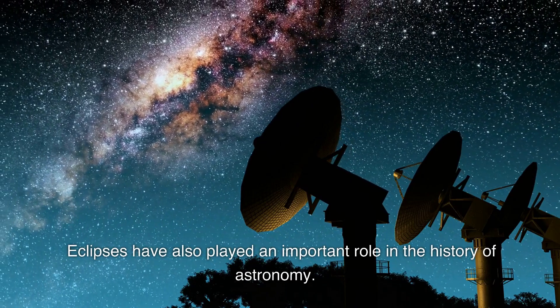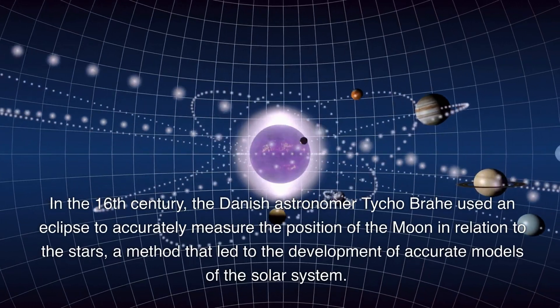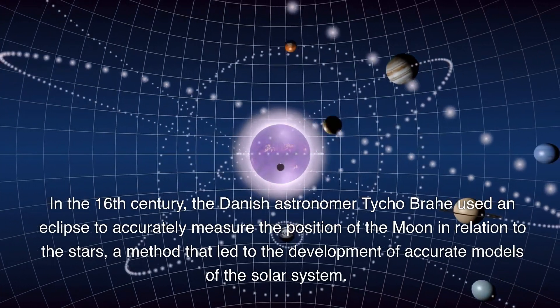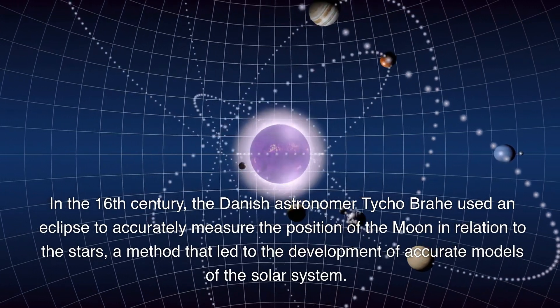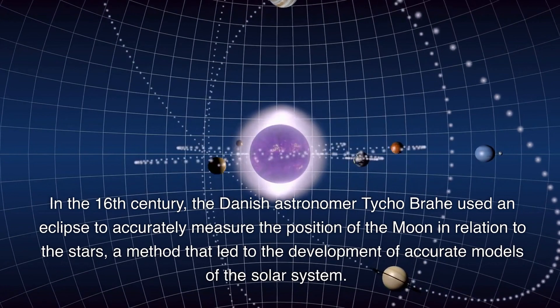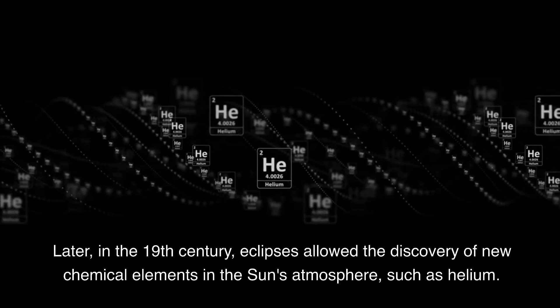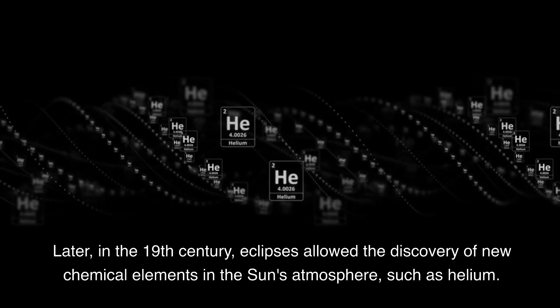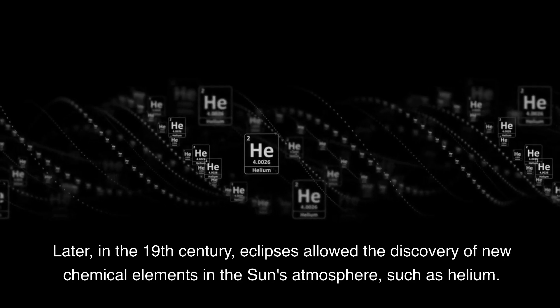Eclipses have also played an important role in the history of astronomy. In the 16th century, the Danish astronomer Tycho Brahe used an eclipse to accurately measure the position of the moon in relation to the stars, a method that led to the development of accurate models of the solar system. Later, in the 19th century, eclipses allowed the discovery of new chemical elements in the sun's atmosphere, such as helium.